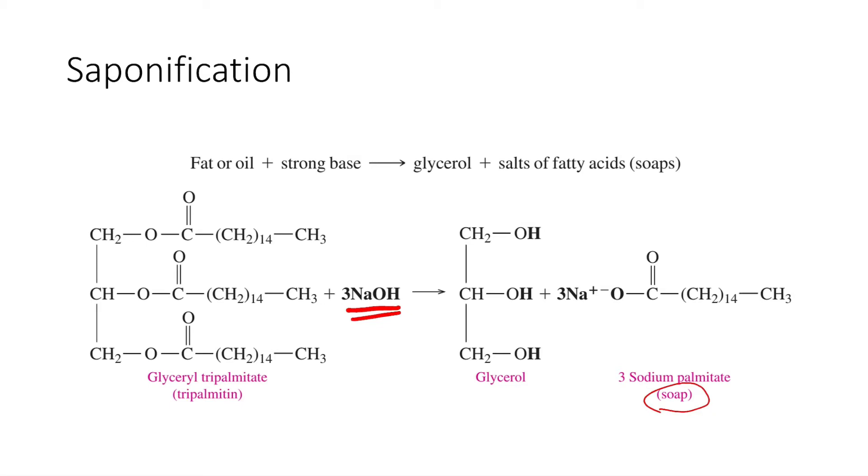Oils that are polyunsaturated produce softer soaps. Names like coconut or avocado shampoo tell us the sources of the oil used in the saponification reaction.